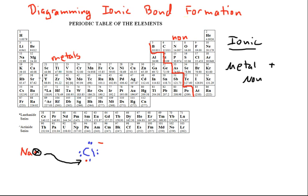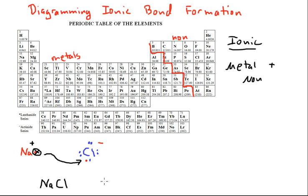Sodium loses its one valence electron in the 3S sublevel, dropping down to having an electron configuration which will match the electron configuration of neon. So sodium is now going to have a positive charge — a charge of plus one. Chloride ions have a charge of minus one. So the chemical formula for this compound gives the lowest whole number ratio: a one-to-one ratio, showing us the formation of sodium chloride.